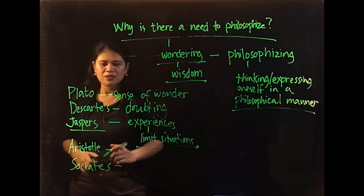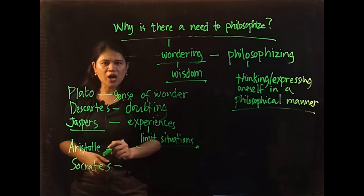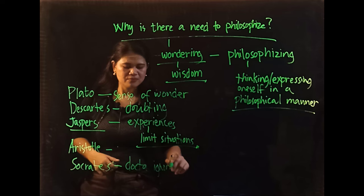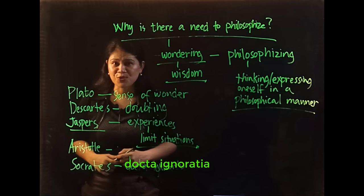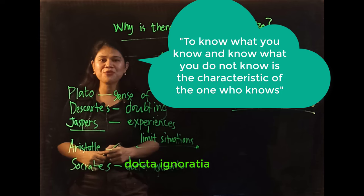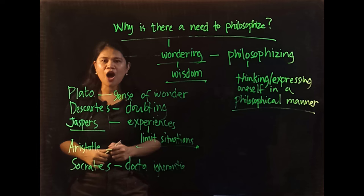For Socrates, the start of wisdom is docta ignorantia—to know that you do not know. As they say, to know what one knows and know what you do not know is a characteristic of the one who knows. It is in our state of ignorance that we begin to learn and understand.